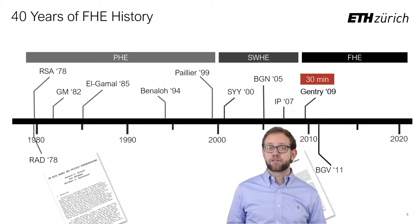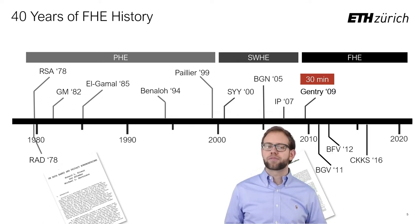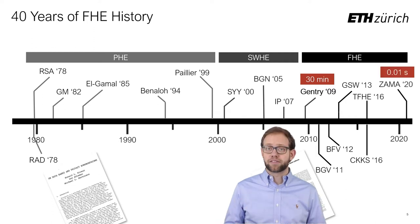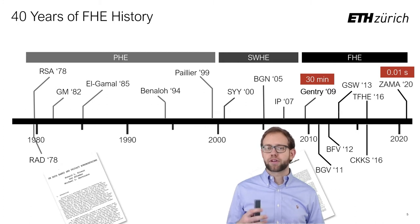Second-generation schemes emerged and traded off some theoretical expressiveness for impressive practical performance gains, bringing multiplication times down to seconds rather than minutes. Finally, recent third-generation schemes have brought multiplication times down into the range of a few tens of milliseconds. Today, FHE is practical for a wide set of applications, and performance is no longer the major barrier to adoption.